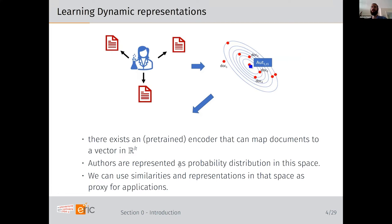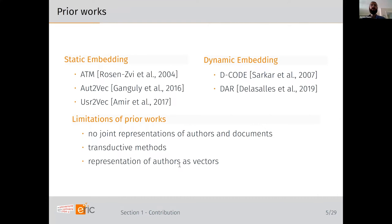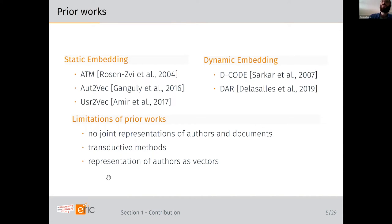There is very little prior work on author representation. There are topic-based methods such as ATM and Author2Vec, and only two dynamic embedding methods, the more recent being the work on dynamic author representation. The main limitations of prior works are: they do not learn joint representations of authors and documents, so you cannot compute author-document similarities; they are transductive, meaning a new author requires retraining; and they represent authors as plain vectors rather than distributions.